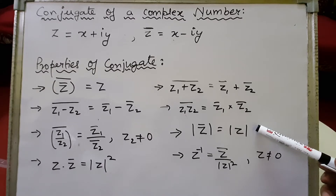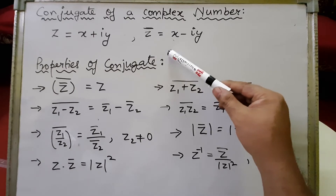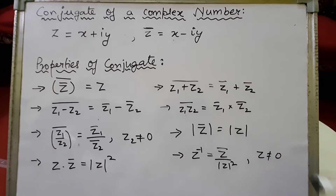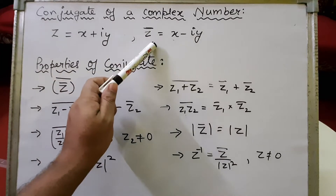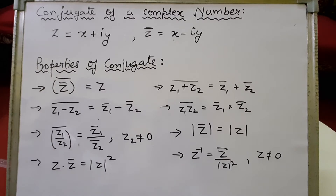The modulus of the conjugate of z equals mod of z, since taking mod of z-bar gives under root x squared plus y squared, same as mod of z — so modulus is unchanged by conjugation. Furthermore, if we multiply z into z-conjugate, we get x plus iy times x minus iy, which equals x squared plus y squared, and this equals mod of z squared.